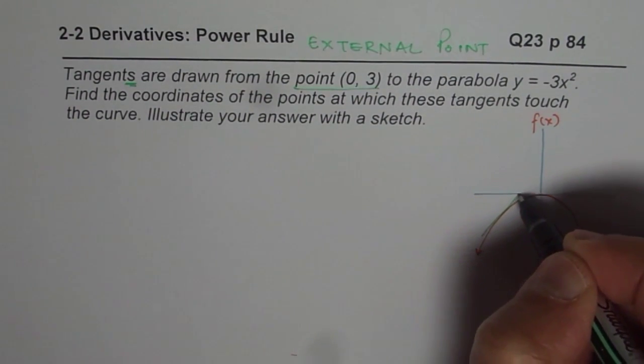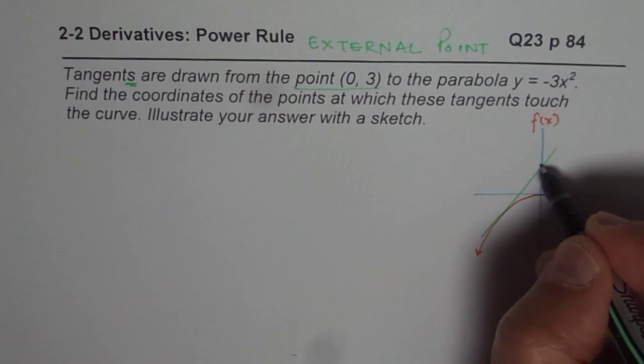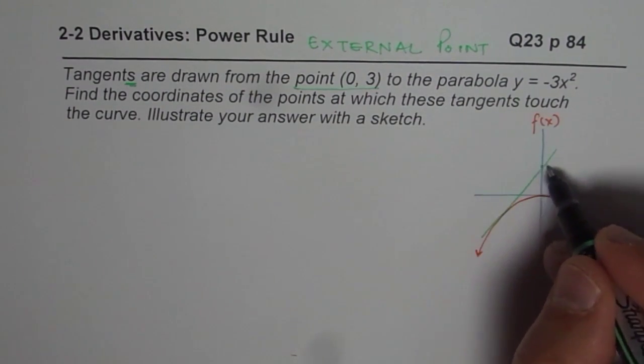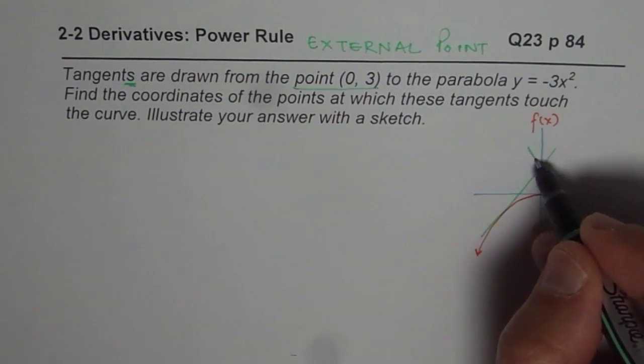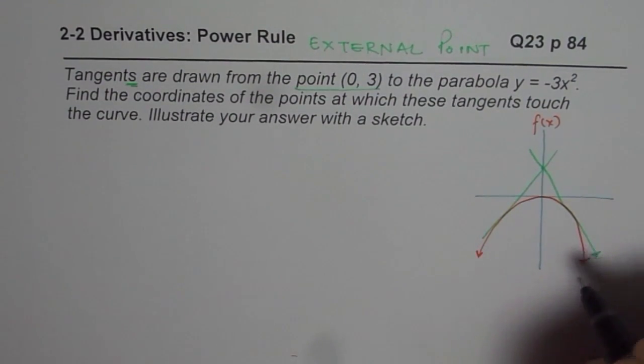From an external point, you can draw two tangents to a parabola. So let me first sketch some tangents here and then wherever they meet. So that is one tangent. This is my point (0, 3). And then from here, I'll draw another tangent to the curve. So this is my second tangent.